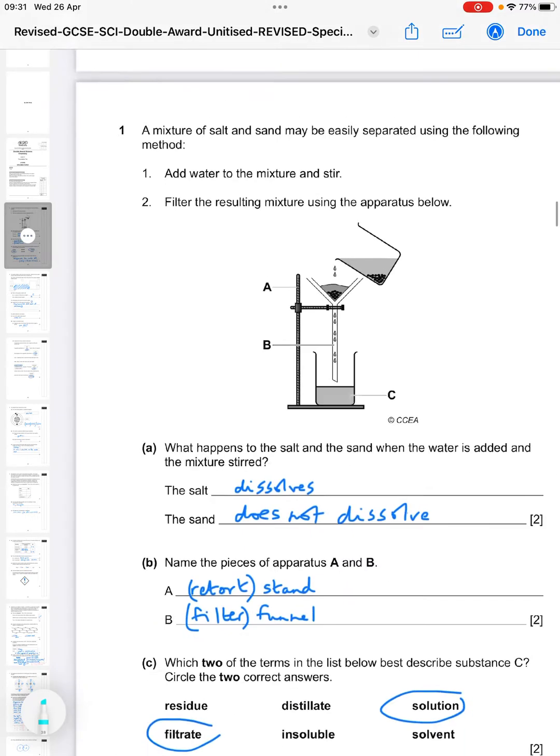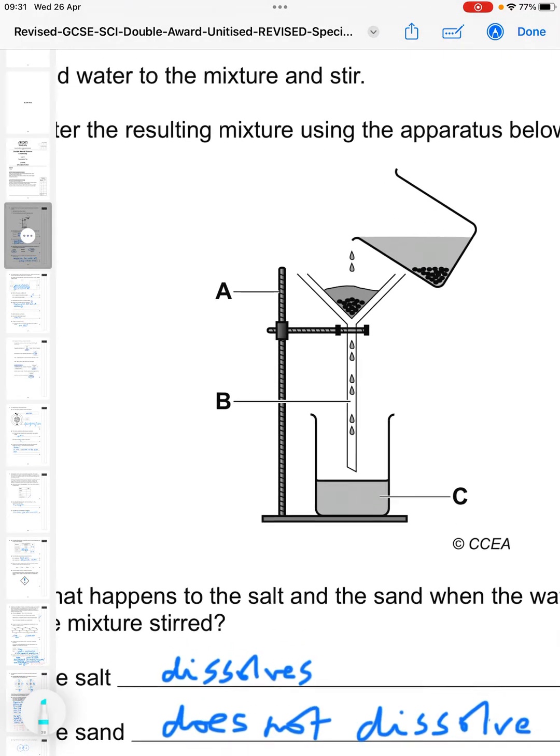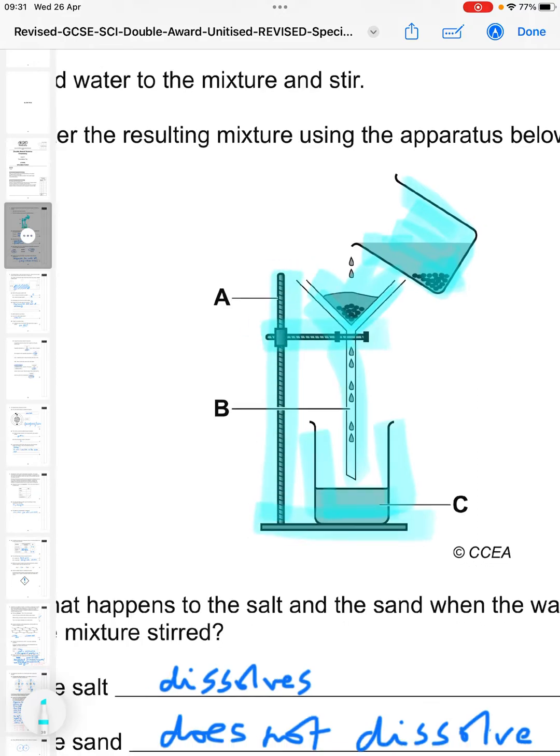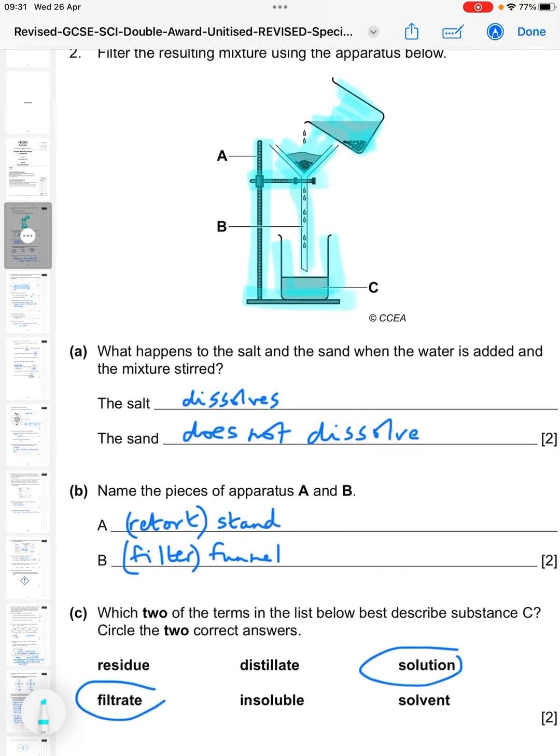Question one. A mixture of salt and sand may be easily separated using the following method. Add water to the mixture and stir, then filter the resulting mixture using the apparatus below. And you see here what we've got - there's a beaker with some water in it and some solid, filter paper here, filter funnel, we've got a beaker then with the filtrate in it, we've got a stand.